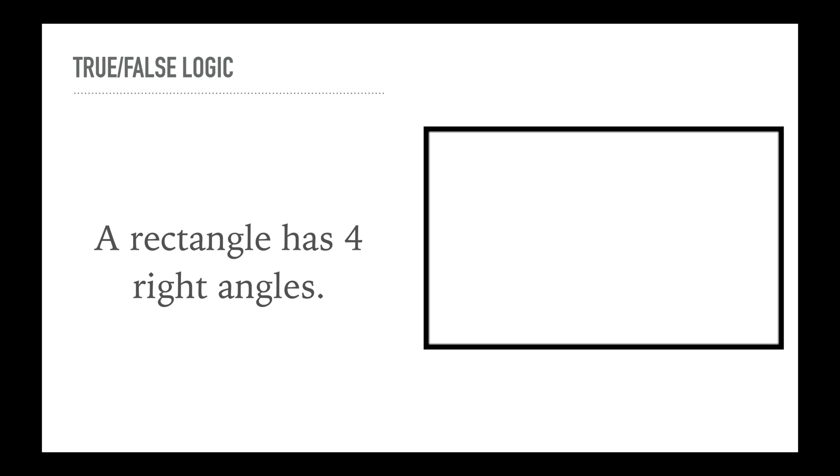This one says a rectangle has four right angles. Now if you don't remember, the definition of a rectangle is it is a quadrilateral with four congruent angles. And all four angles to be congruent have to be 90 degrees or right angles. Therefore, by definition, a rectangle does have four right angles.